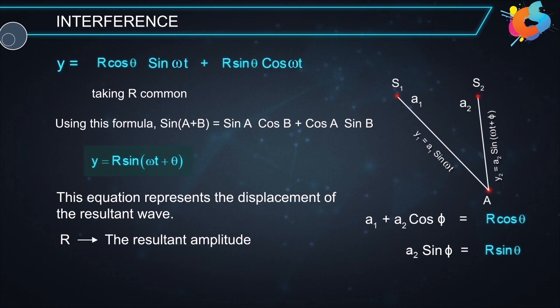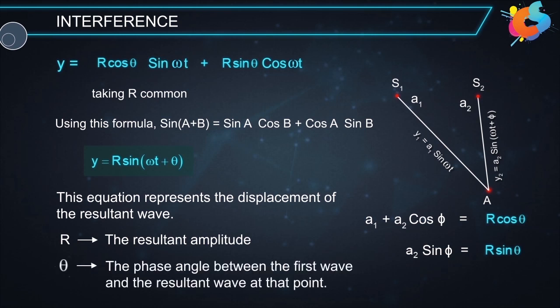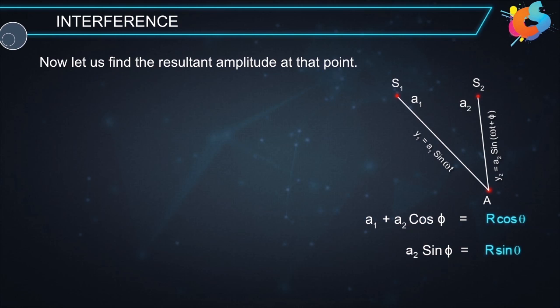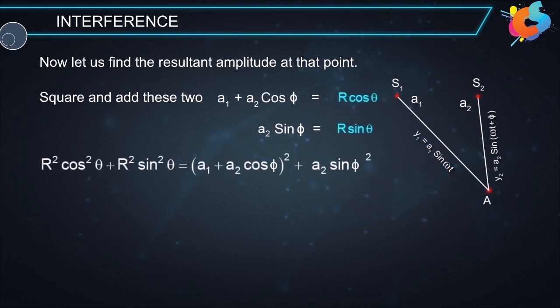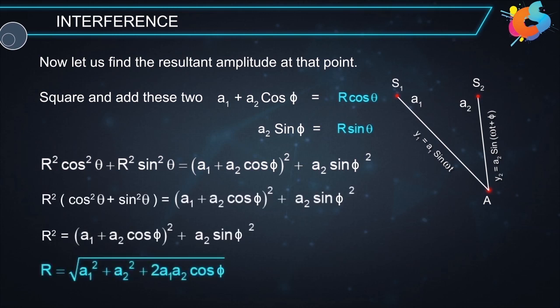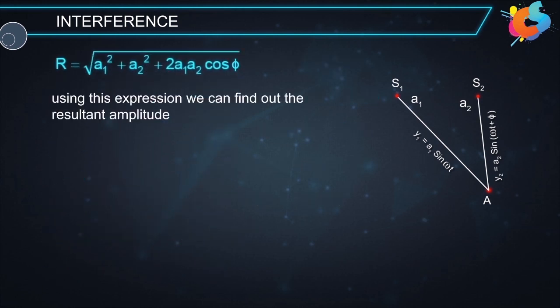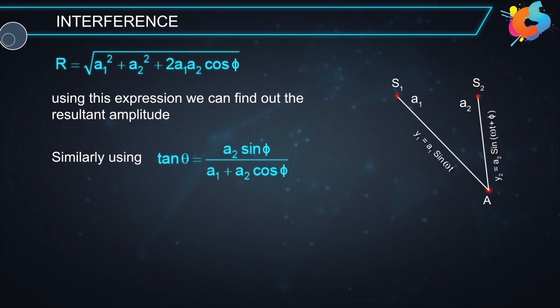Here r is called the resultant amplitude and θ is the phase angle between the first wave and the resultant wave at that point. To find the resultant amplitude, we square and add the two expressions. After simplification we get r = √(A1² + A2² + 2A1A2 cos φ). Using this expression we can find out the resultant amplitude.